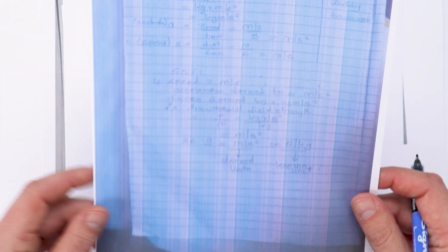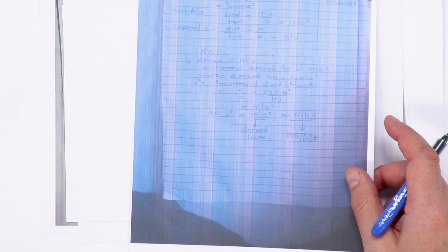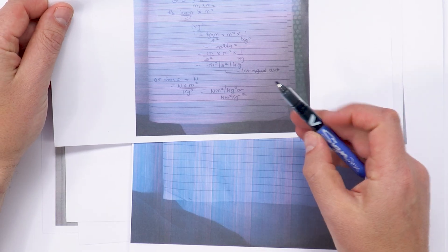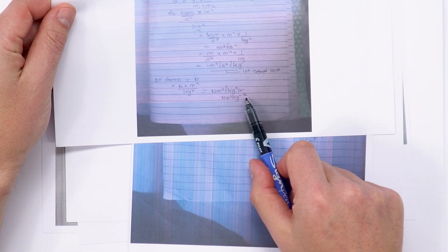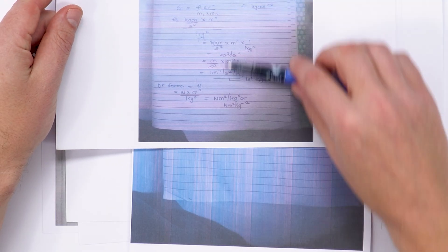So you can see that there are a whole different range of approaches and again this student here again the printout is probably not the best it's a lot easier to see on my screen but again they've got newtons metres squared kilograms to the minus 2 kind of laid out really nicely.